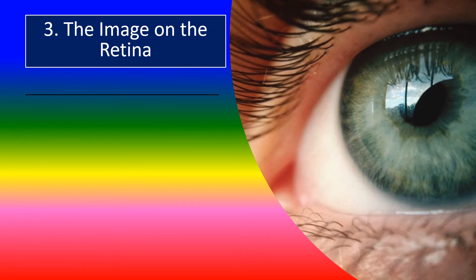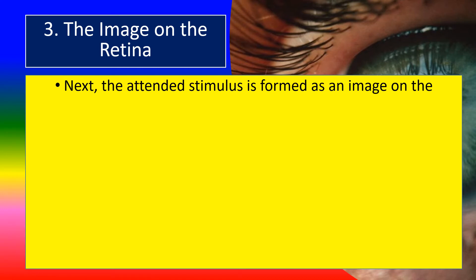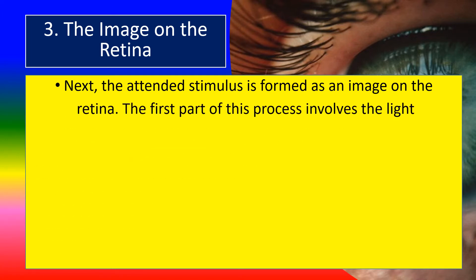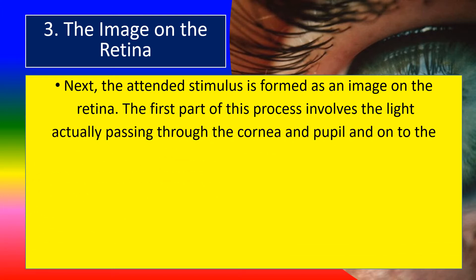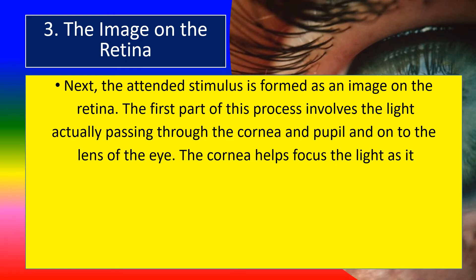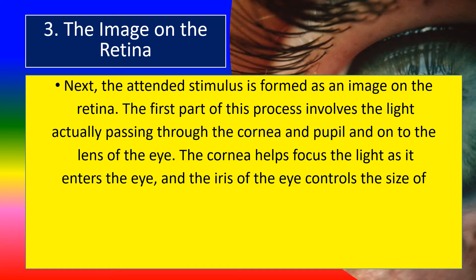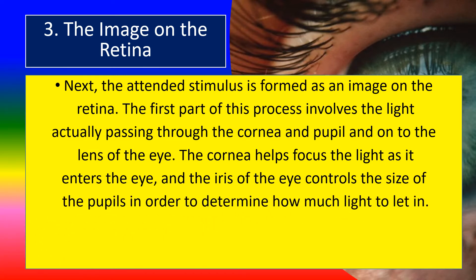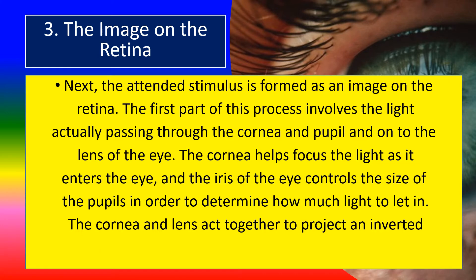Three, the image on the retina. The attended stimulus is formed as an image on the retina. The first part of this process involves light passing through the cornea and pupil and on to the lens of the eye. The cornea helps focus the light as it enters the eye, and the iris controls the size of the pupil to determine how much light to let in. The cornea and lens act together to project an inverted image onto the retina.